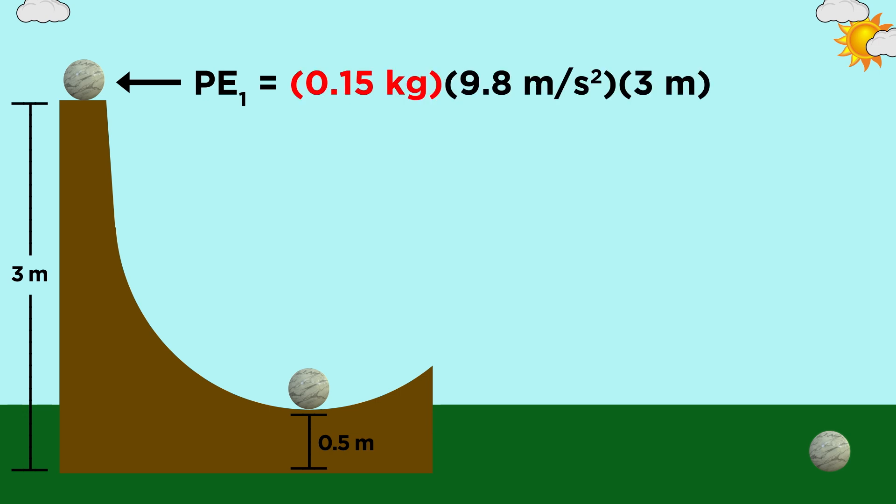We can plug in the mass, acceleration due to gravity, and the height of the ramp, and we get four point four kilograms meters squared per second squared, or four point four joules.